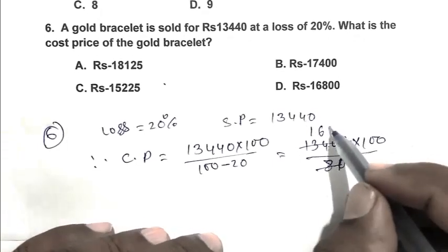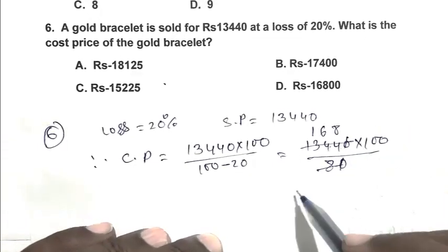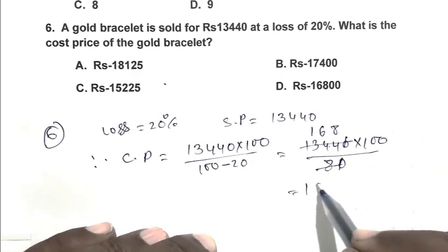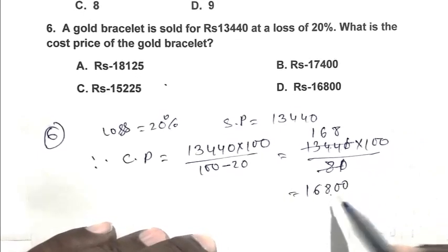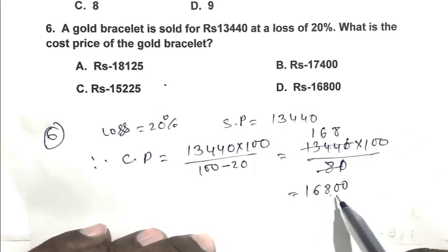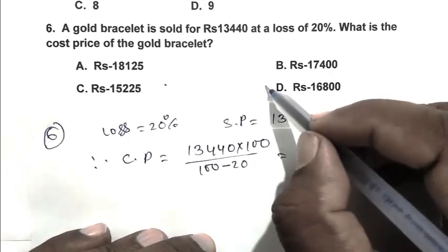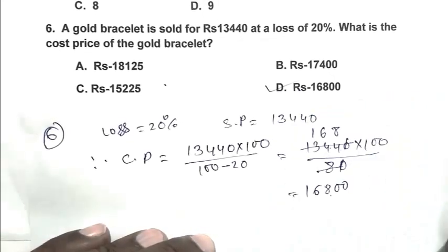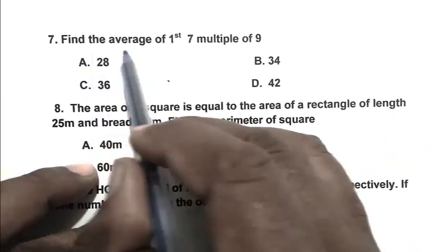Calculating: 13,440 divided by 80 gives 168, multiplied by 100 gives 16,800. So the cost price is rupees 16,800. D is the right answer.